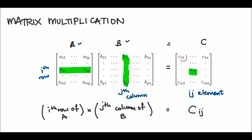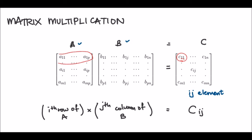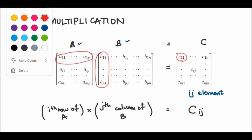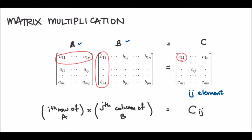For example, to find element C(1,1), you need the first row of matrix A and the first column of matrix B, then multiply and sum them — that gives C(1,1). For another example, to find element C(M,N), you need to take the Mth row from matrix A and multiply it with the Nth column of matrix B.